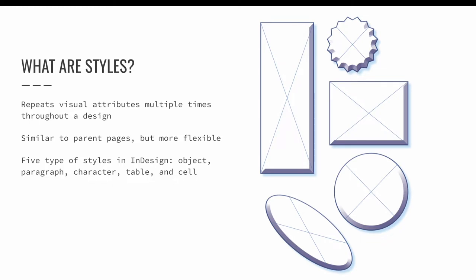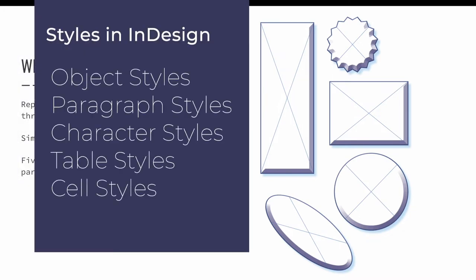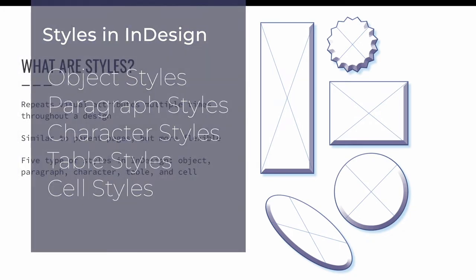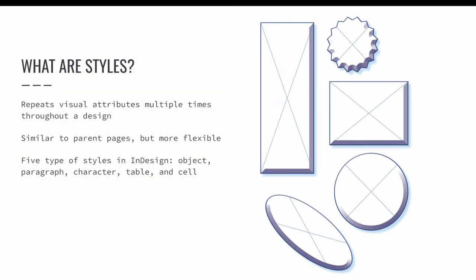There are five types of styles in InDesign: object, paragraph, character, table, and cell. The visual attributes of the graphic frames in this example are repeated using an object style.